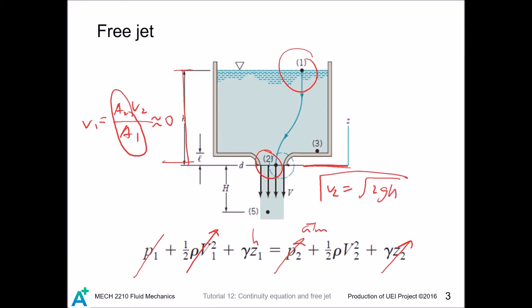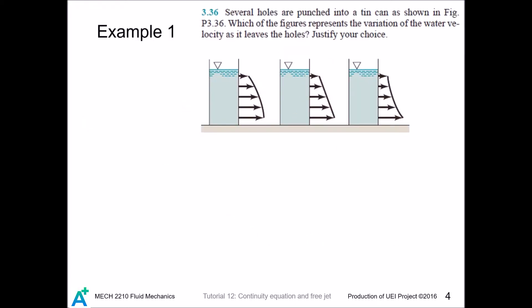Now we look at our first example. All three choices have velocity increase as depth increases, which makes sense. The three choices are different: the first one has the increasing rate decrease as depth increases, so we write d²v/dh² < 0. For the middle one we have d²v/dh² = 0.